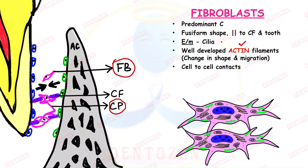Fibroblasts wrap their cytoplasmic processes around collagen fibers. When they receive a signal from the matrix to contract, the actin inside them contracts, creating motility. They pull the collagen fibers towards themselves, generating force which causes tooth movement. This is how PDL fibroblasts contribute to tooth eruption — this is the periodontal ligament traction theory of tooth eruption.